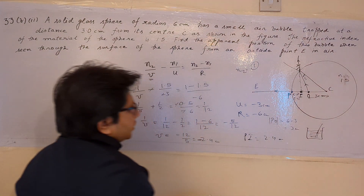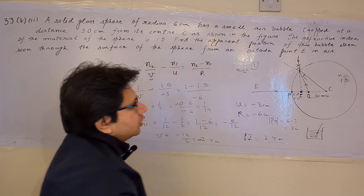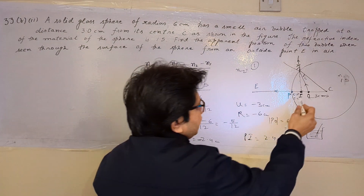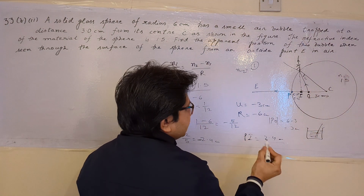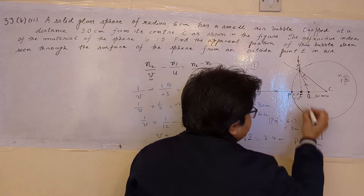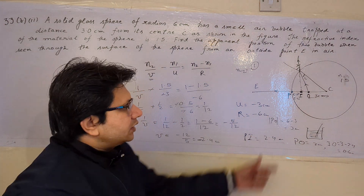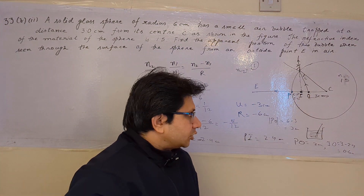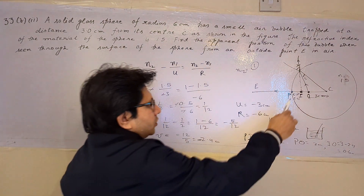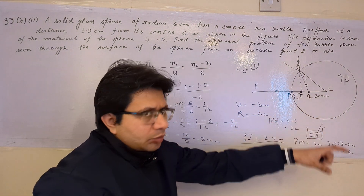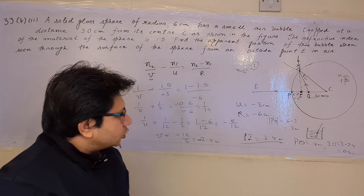So our answer is: the apparent position of the bubble is 2.4 cm from the pole, or from the surface of the glass sphere. If you want to calculate the distance between the object and the image, from the geometry the PO distance is 3 cm. So IO distance is 3 minus 2.4, which equals 0.6 cm. The distance between image and object is 0.6 cm, but the required answer is 2.4 cm — the apparent position of the bubble is 2.4 cm from the surface, inside the glass sphere.